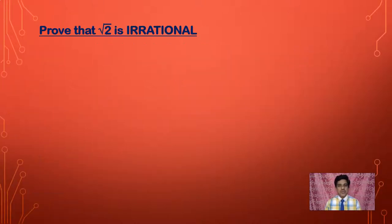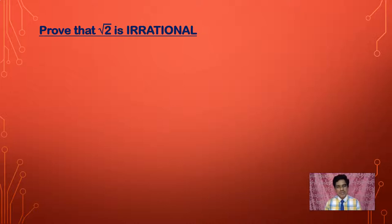Let us prove that square root of 2 is irrational. As we have already discussed, the method of contradiction works like this: whenever you want to prove a statement is true, we start in the opposite direction and take it as false, then we arrive at a contradiction. This is how the method of contradiction works.